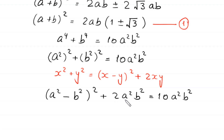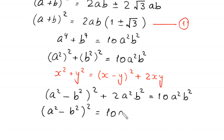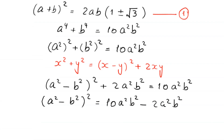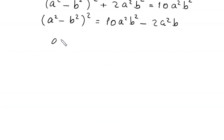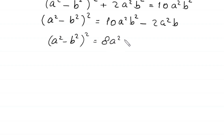Moving 2 a squared b squared to the right hand side gives (a squared minus b squared) whole squared equals 10 times a squared b squared minus 2 a squared b squared. So (a squared minus b squared) whole squared equals 8 times a squared b squared. Taking square root of both sides, we proceed to simplify.